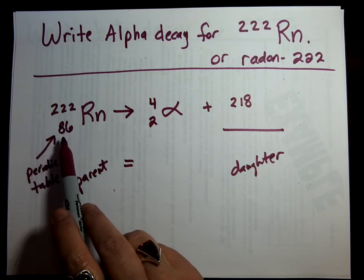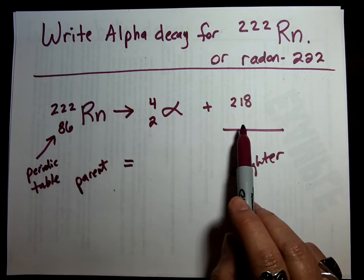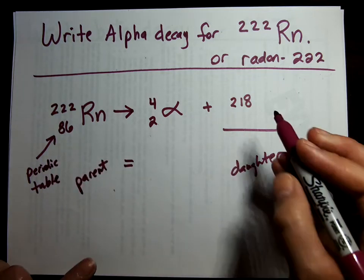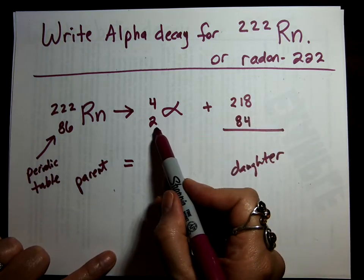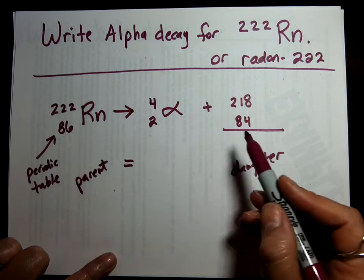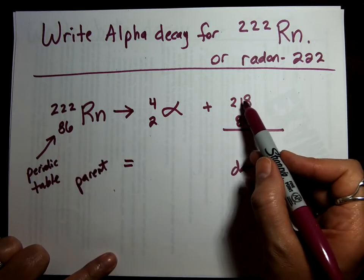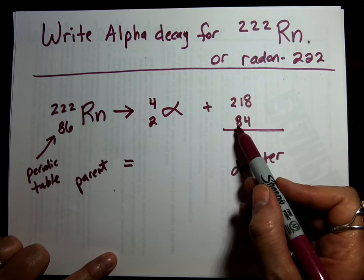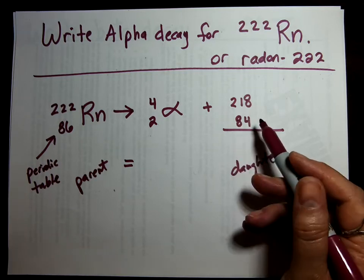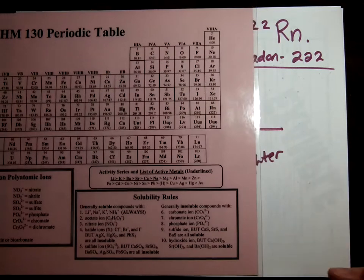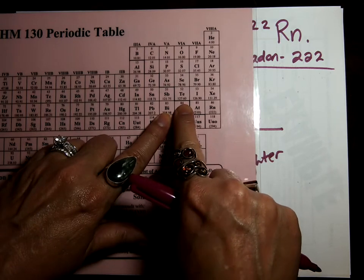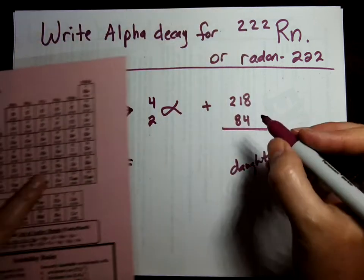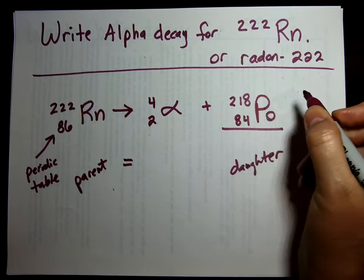Now the bottom numbers. 86 equals 2 plus what? 84. 84 plus 2 is 86. So now we have a mass of 218 on top, and a proton number of 84. What has 84 protons? Look for 84. There it is. P-O. P-O has 84 protons. So P with a little O goes in the blank.